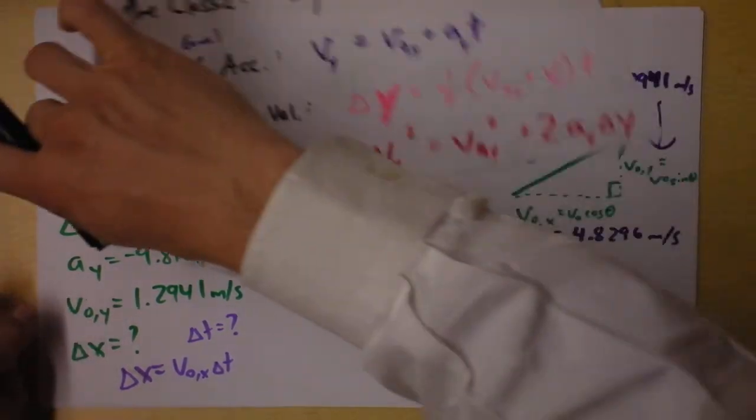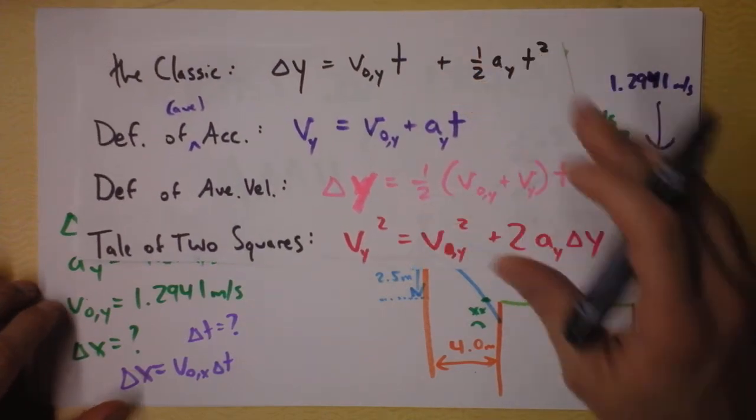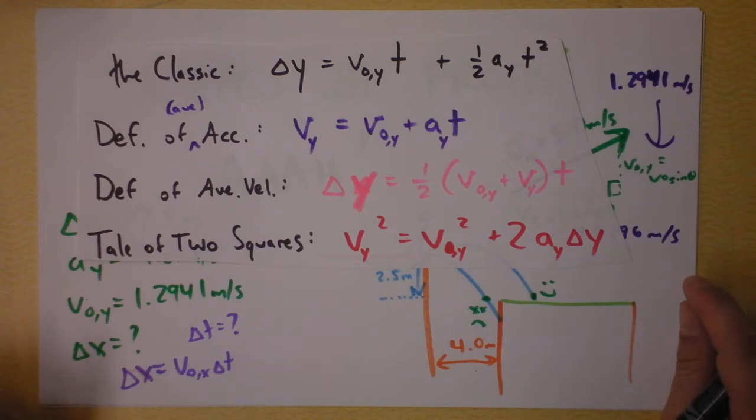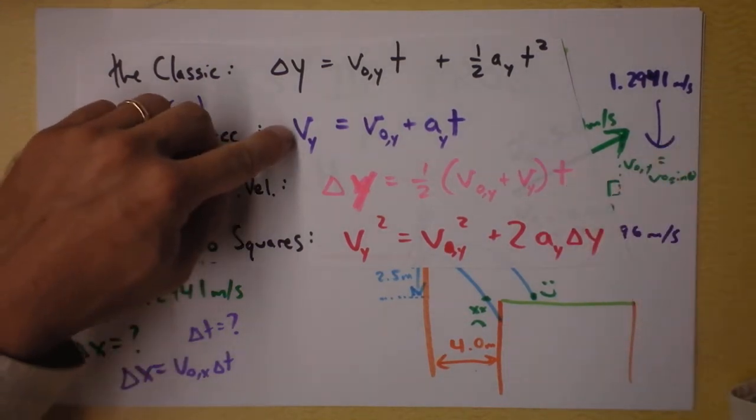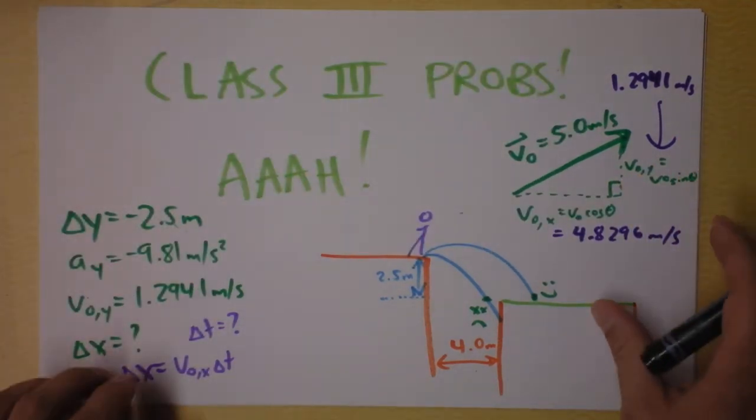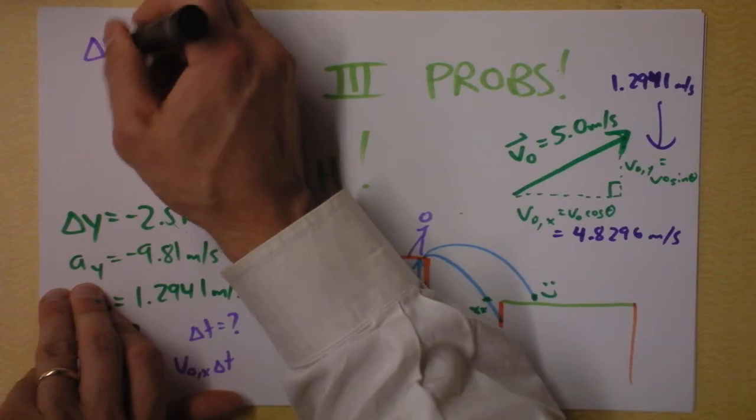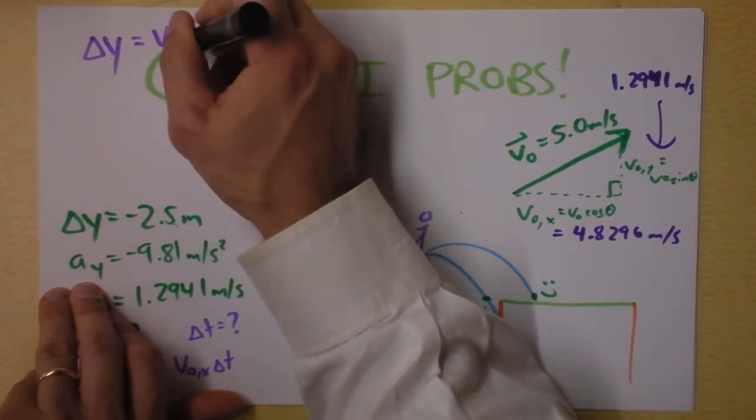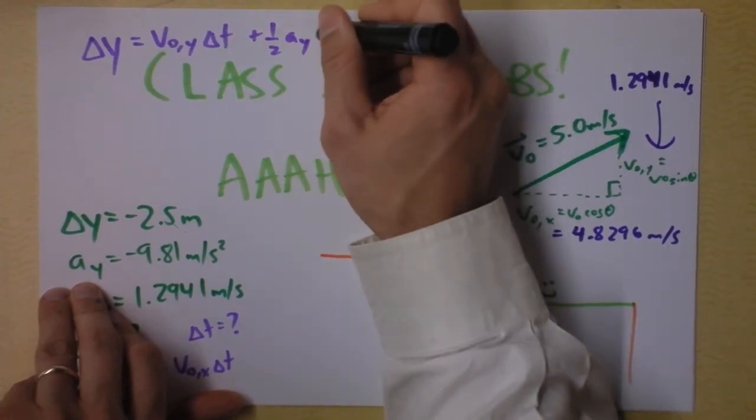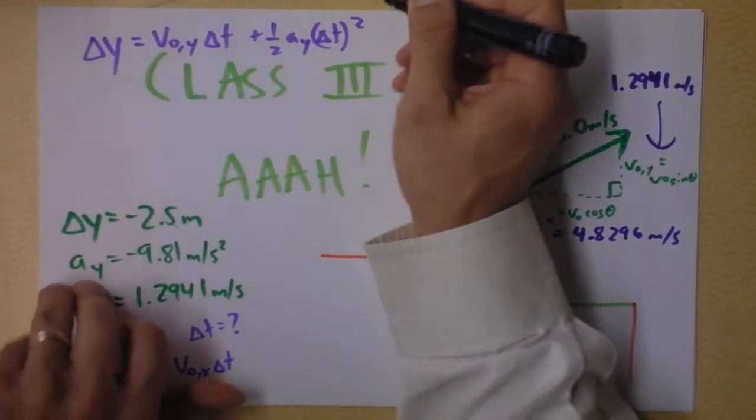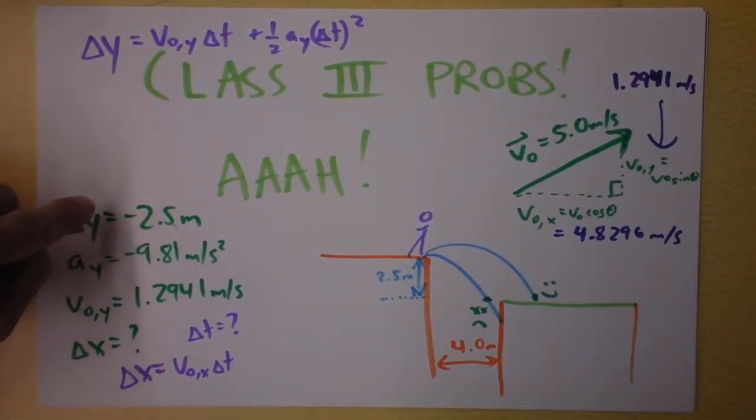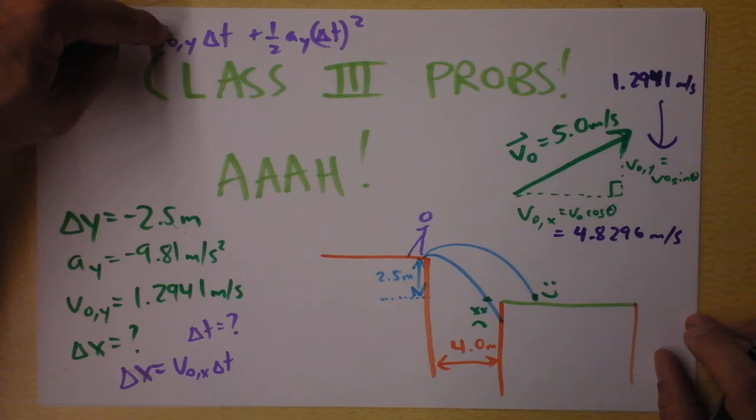So I'm talking about initial velocity in the y direction, and acceleration in the y direction, and delta y, and time. Initial velocity, acceleration, delta y, and time. Initial velocity, oh, not this one. Oh, not that one, because we don't have delta y. This one. Okay, the classic. So write the classic down. I'll tell you delta y equals the initial velocity in the y direction times time plus one half the acceleration in the y direction times time squared.